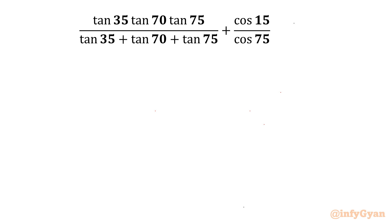Welcome back to Infigyan, my dear friends. In this video we are going to simplify one very interesting trigonometric expression: tan 35 times tan 70 times tan 75, over tan 35 plus tan 70 plus tan 75, plus cosine 15 over cosine 75.